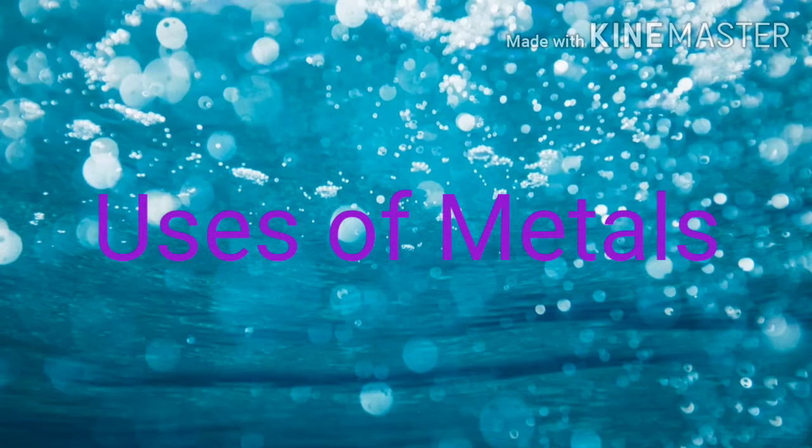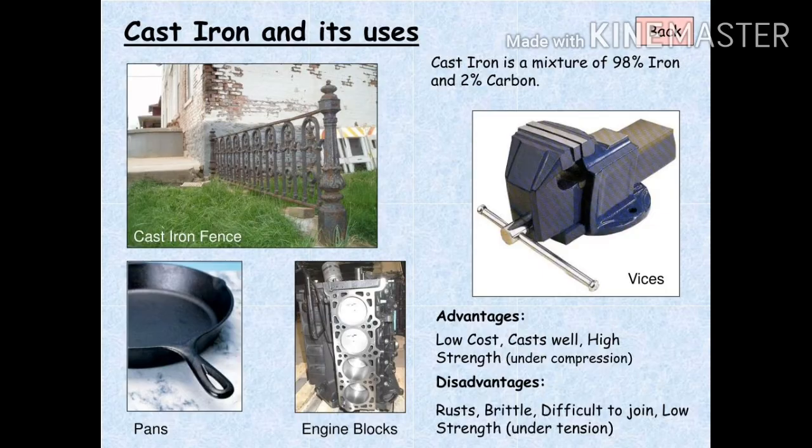Good morning everyone. In today's period we are going to learn about uses of metals, one by one. The first metal is iron. Iron is a very effective material — a mixture of 98% iron and 2% carbon. Many things around us are made using iron, like pans and engine blocks. Iron is also used to make pipes, railings, cylinders, and storage tanks.